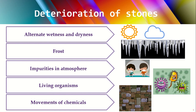Next is movement of chemicals. This type of decaying is generally observed when stones of different varieties are used together — for example, limestone and sandstone. Limestone and sandstone have different compositions. But when you place these two stones beside each other in the same structure, the chemicals formed by the action of atmospheric agencies on one variety of stone may move onto the other, causing deterioration of that stone as well. It's like a transmission.